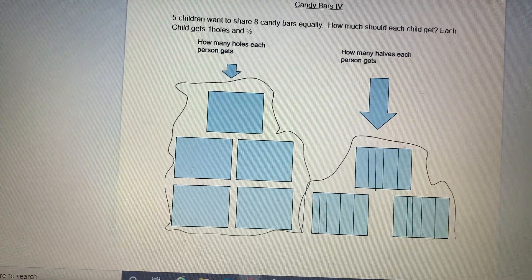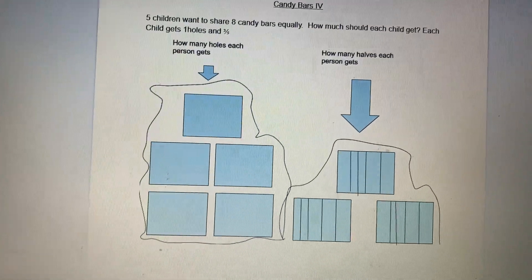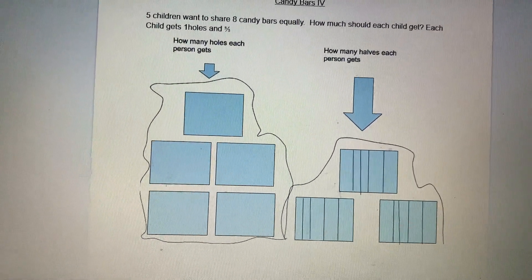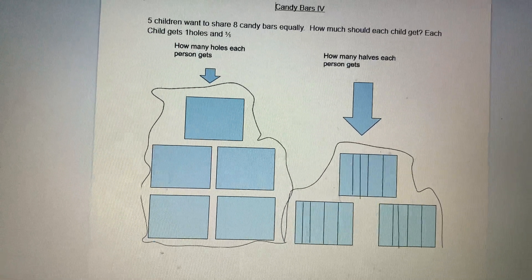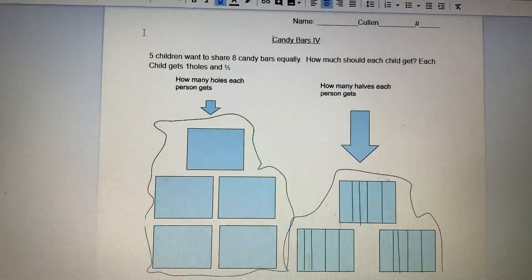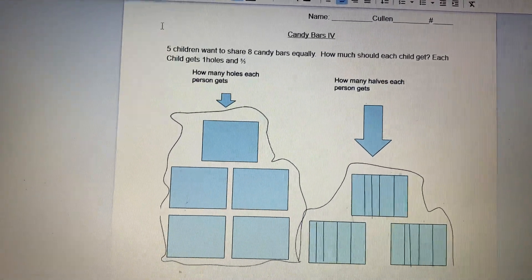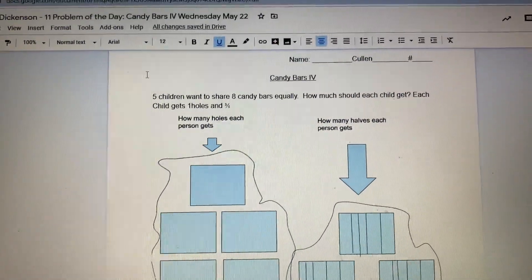Then I rechecked my answer. Then I realized that, oh, I can't believe I made this mistake. Okay, so I see that you thought initially it was just one fifth every person would get, but then you realized there was more than just one fifth.